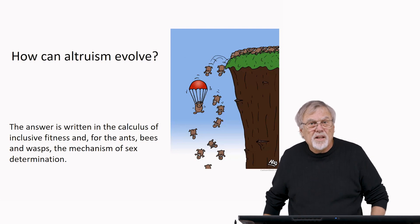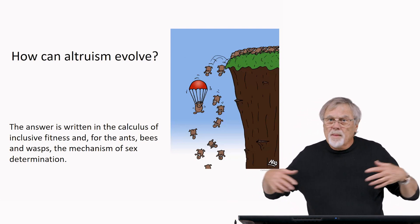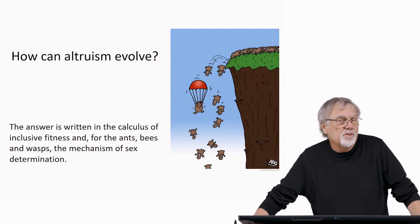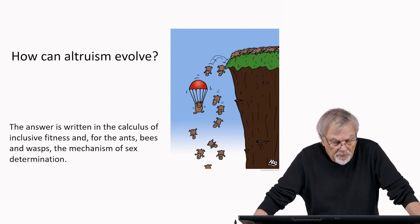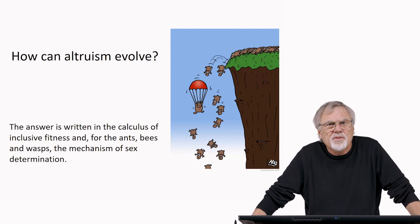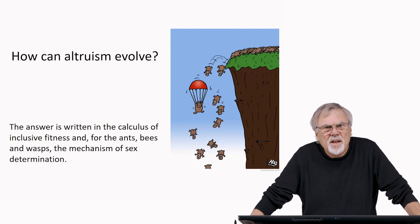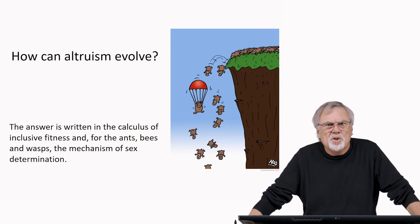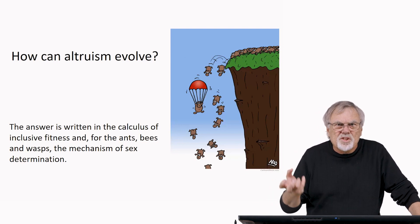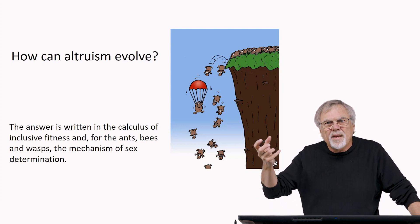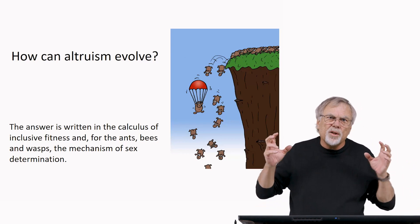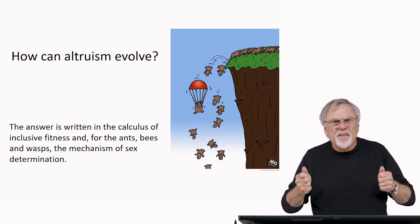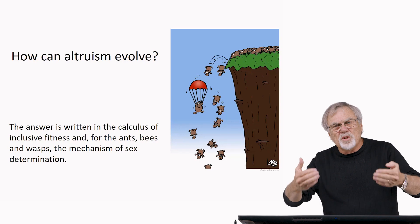How can altruism evolve? That's a question that's been floating around ever since Darwin, or even before. The answer is written in the calculus of inclusive fitness. And for the ants, bees, and wasps, the mechanism of sex determination gives them benefits that we measure in the context of a term we call inclusive fitness, and therefore altruism can evolve.